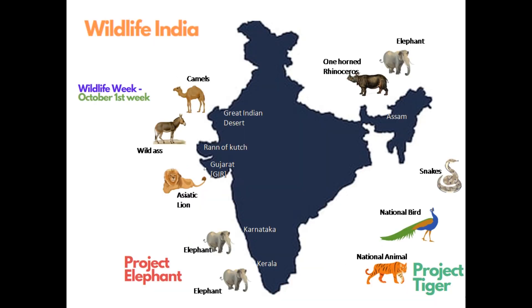Wildlife Week in India is celebrated in the first week of October. The tiger is our national animal and the peacock is our national bird. One-horned rhinoceros and elephants are seen in the forests of Assam; elephants are also found in Kerala and Karnataka. The Asiatic lion is seen in the Gir forest of Gujarat. Camels and wild asses are seen in the Rann of Kutch and the Great Indian Desert. Snow leopards, wild goats and bears are found in the Himalayas.